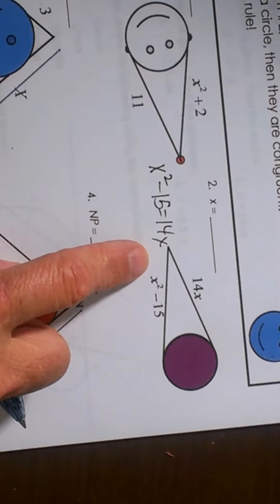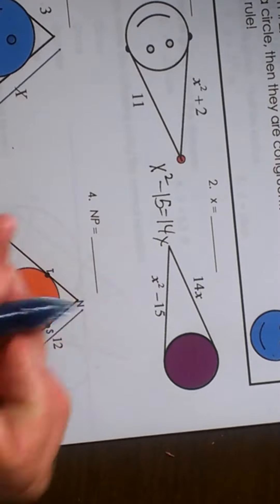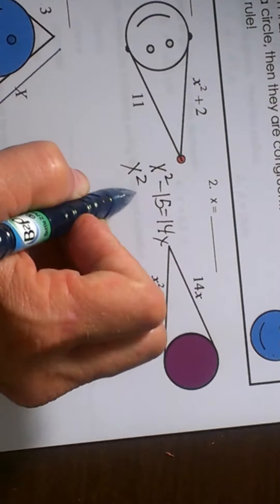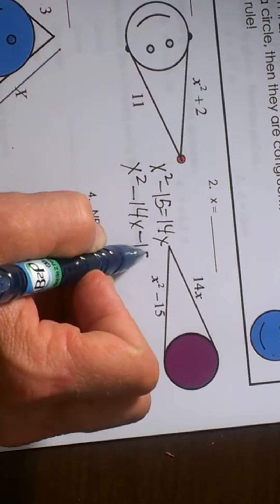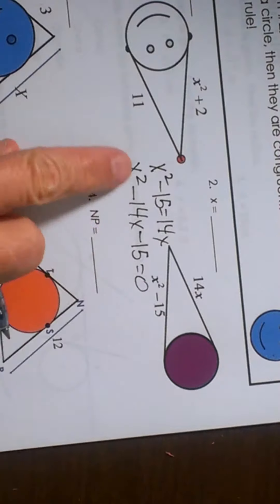Now this is a quadratic, so I'm going to have to get everything on the same side in descending order. So I'm going to move the 14x over and make it negative 14x and bring my negative 15 to the back to get it in descending order.